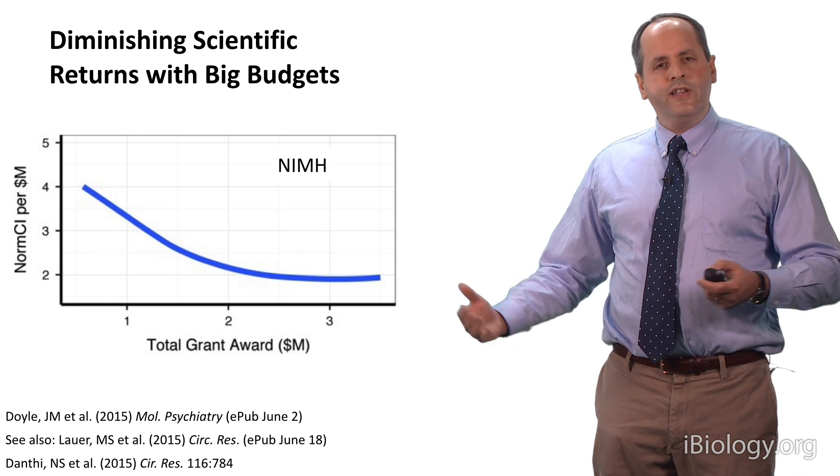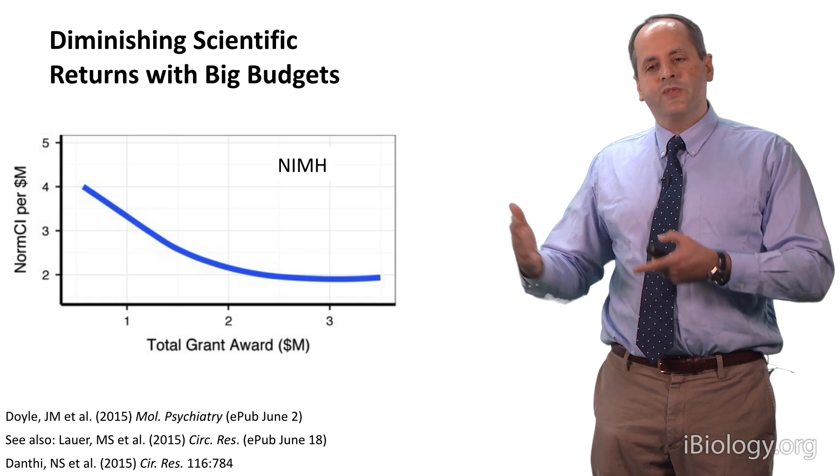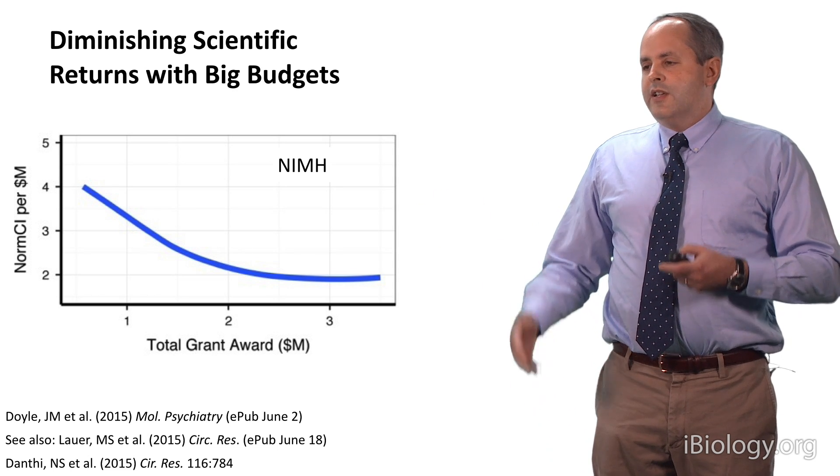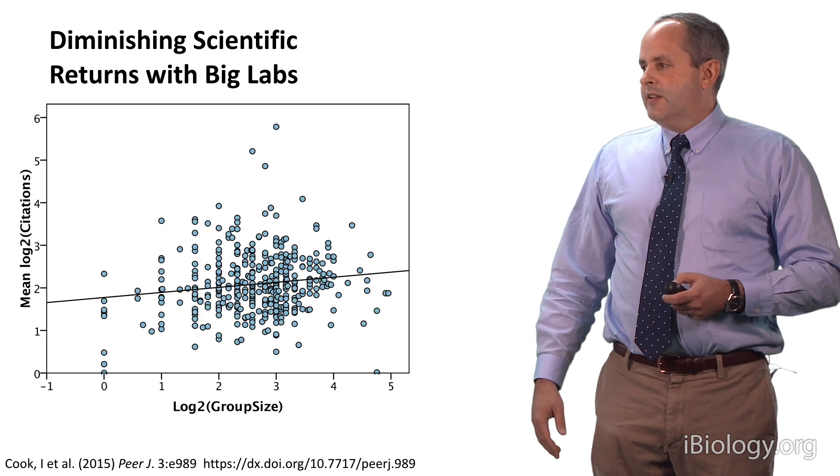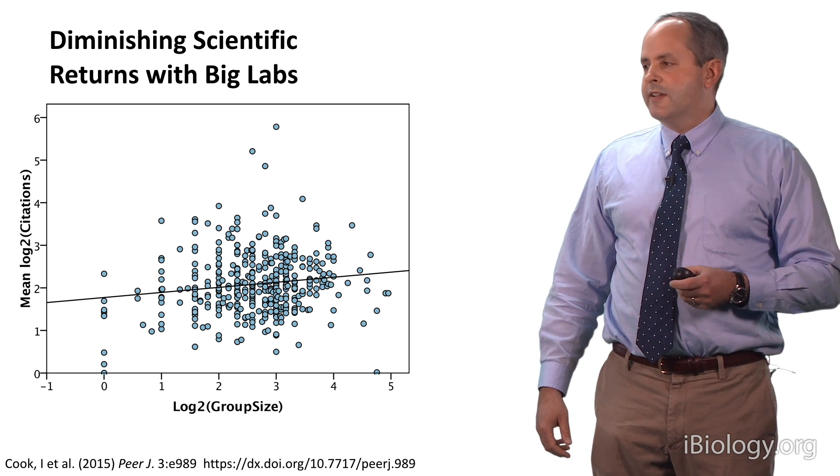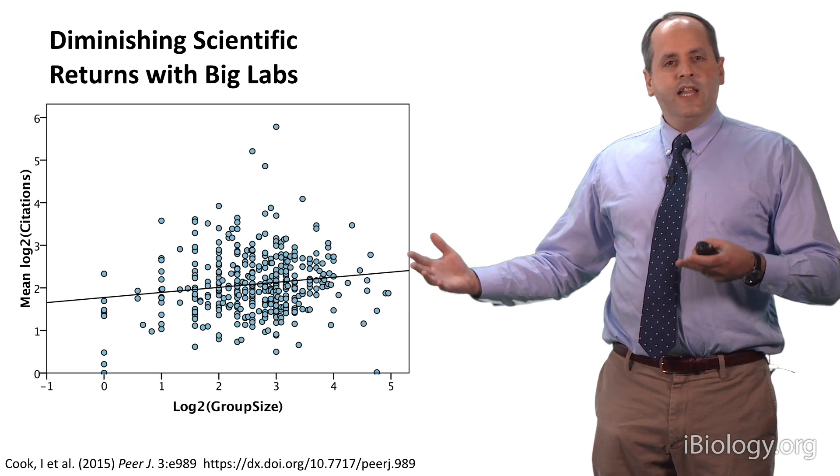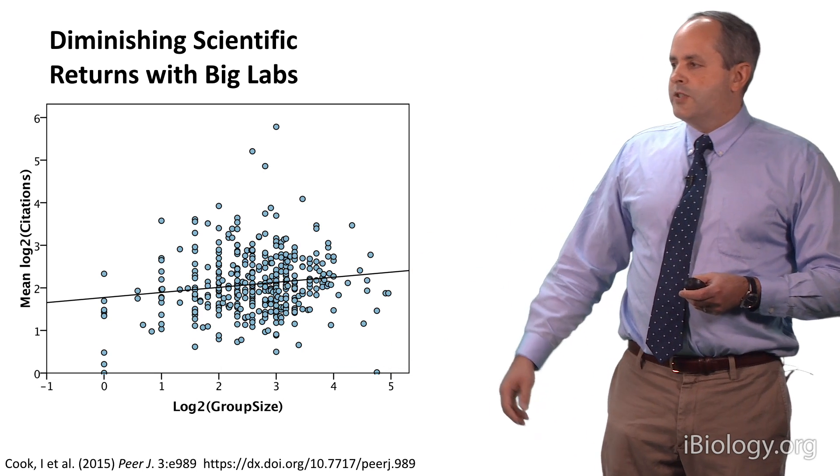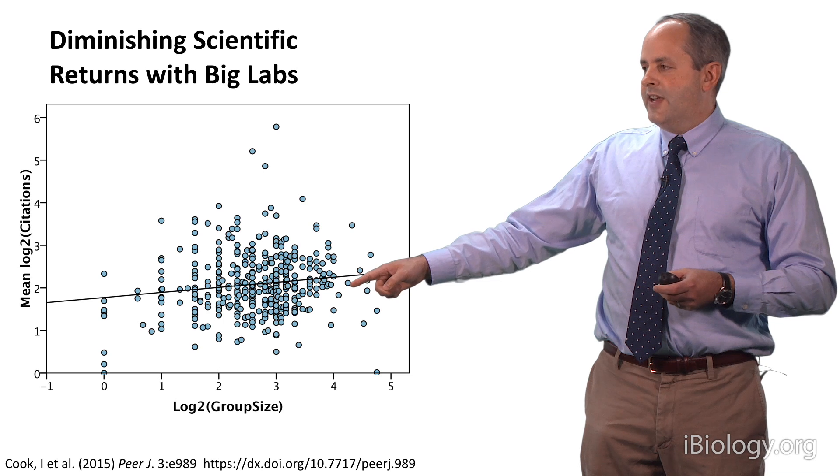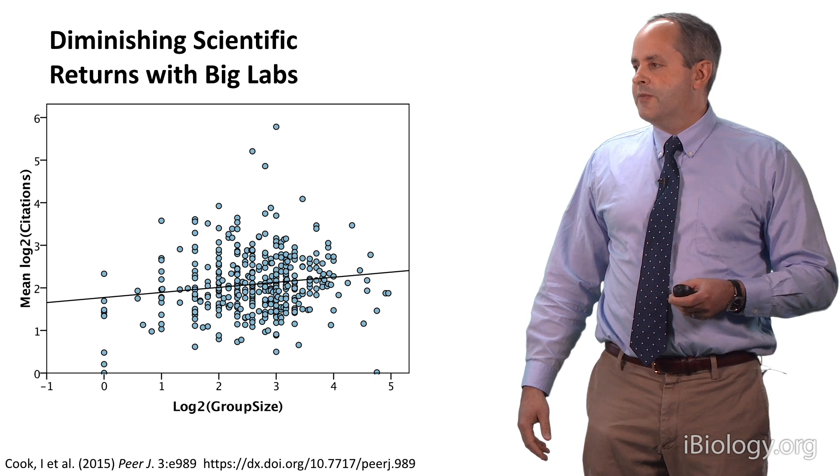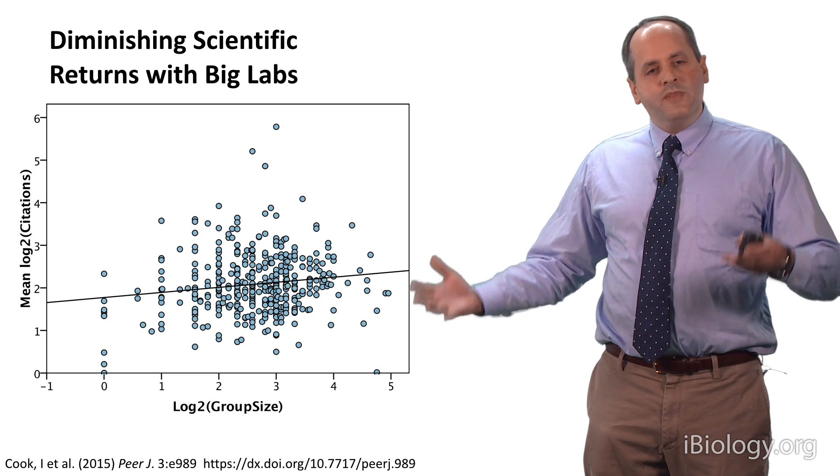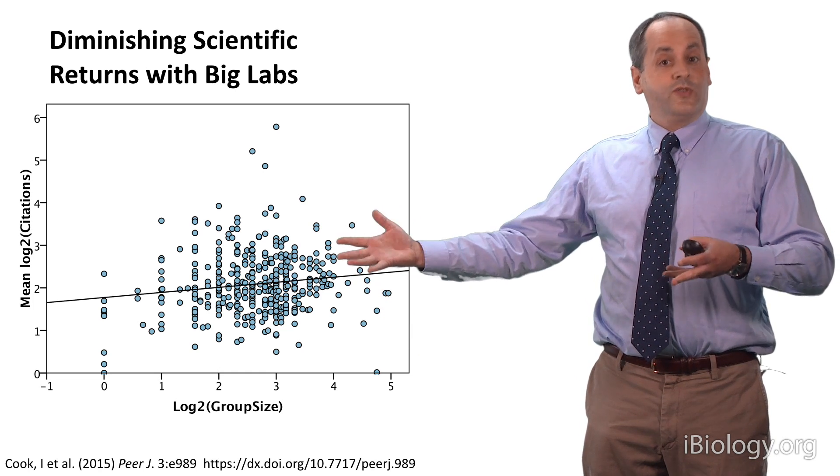Now, everything I've shown you so far has to do with funding as the metric. And of course, funding is related to group size, although there are caveats, such as some research is more expensive than other research. So what about group size itself as a metric? It turns out, very recently, a very interesting study was done in the life sciences research system in the United Kingdom. It looked at group size and a variety of different metrics of productivity and impact. What I'm showing here is citations as a function of group size. You can see that they vary basically hardly at all. It's basically a flat line with a very shallow slope over this metric here. That's also consistent with diminishing marginal returns, in this case, as a function directly of group size.